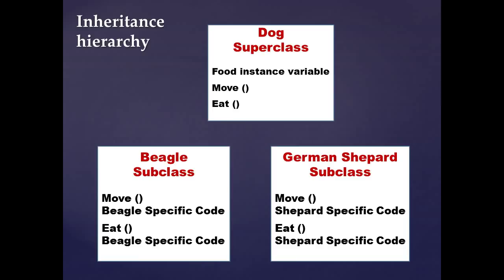Keep in mind that when we inherit methods from the superclass, we are overriding the superclass method — this is now a different method. The only things we are reusing are the name of the method, which is 'move', the arguments, and the return type. The specific code inside is something new and different from the superclass method.